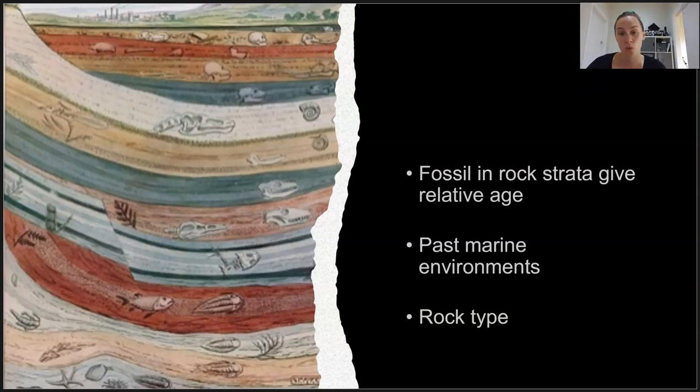So sedimentary rock indicates that some type of water would have settled deposits. Igneous rock might indicate that volcanic activities occurred, so that might be a disturbance that may have caused new land to form.